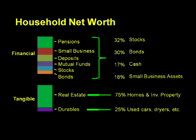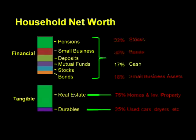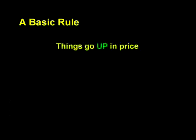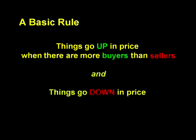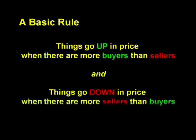For every single one of all of these assets, except cash, in order to liberate the wealth from these assets, you'd have to sell them first. Now, one general rule of asset markets goes like this: things go up in price when there are more buyers than sellers, and things go down in price when there are more sellers than buyers. Hold on to that thought for when we get to demographics.